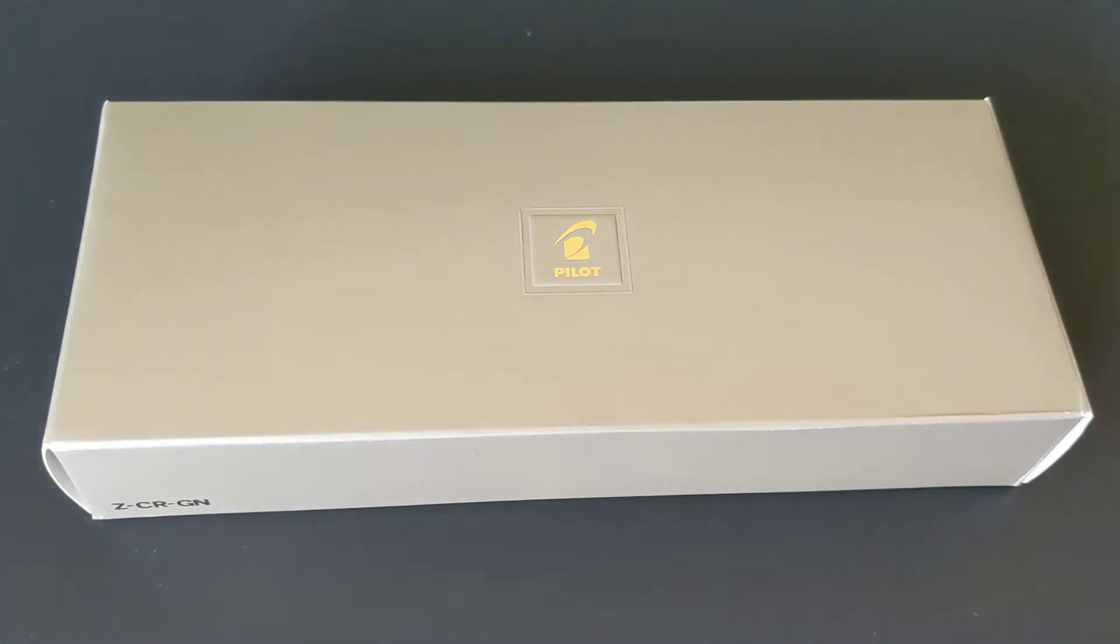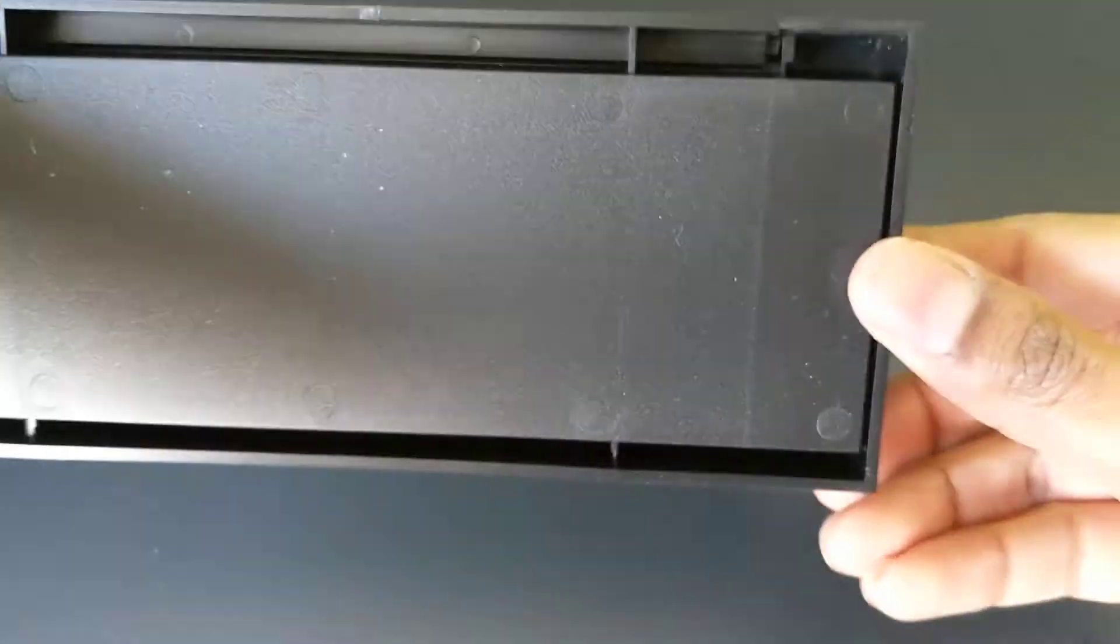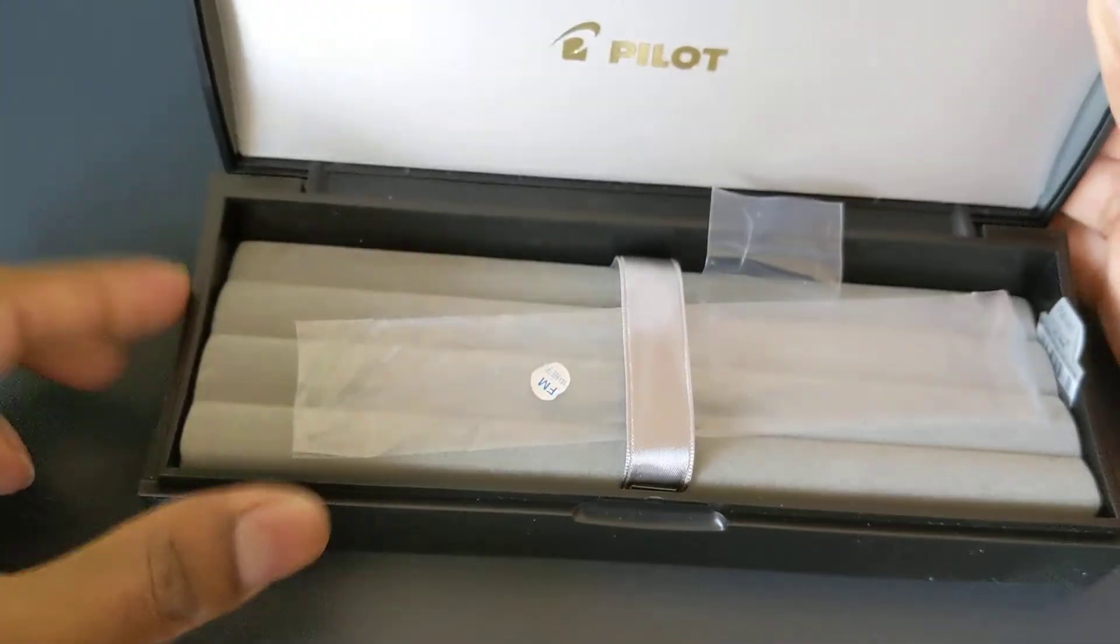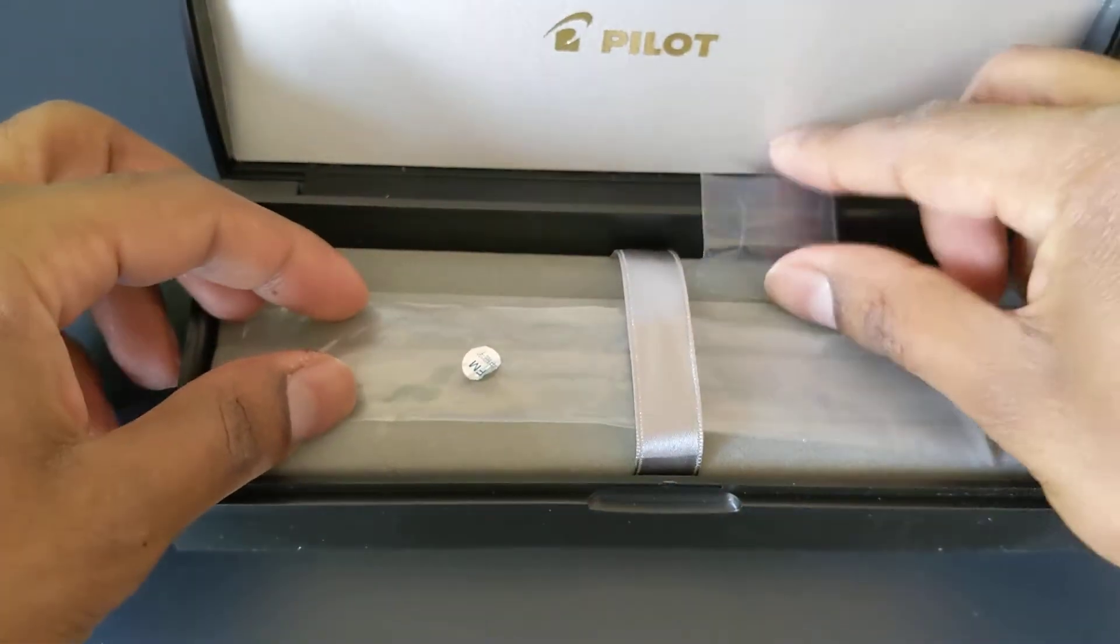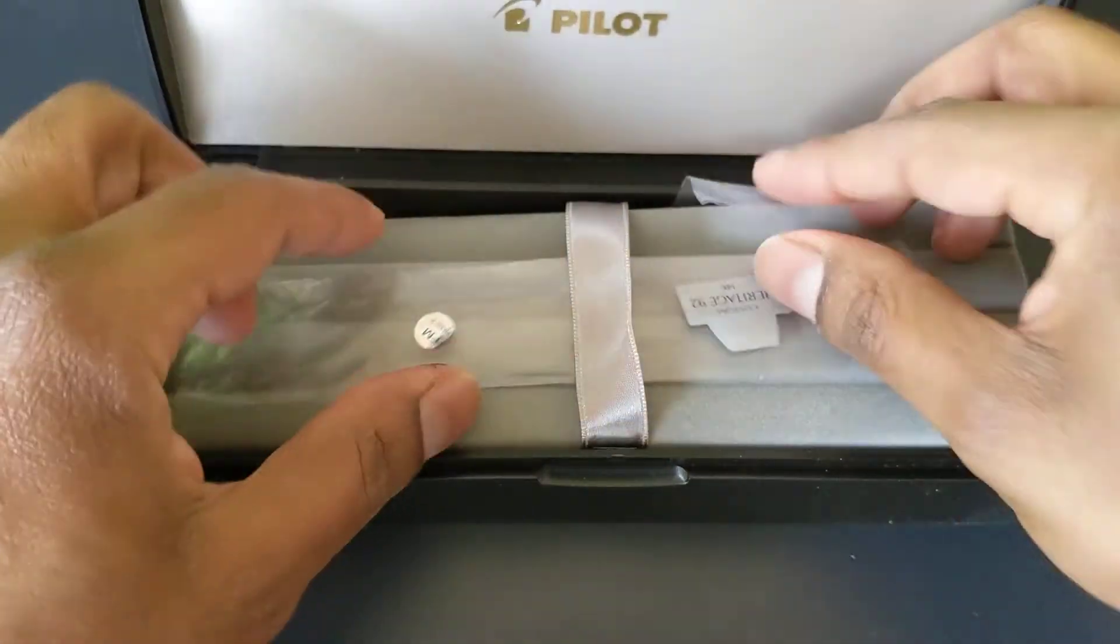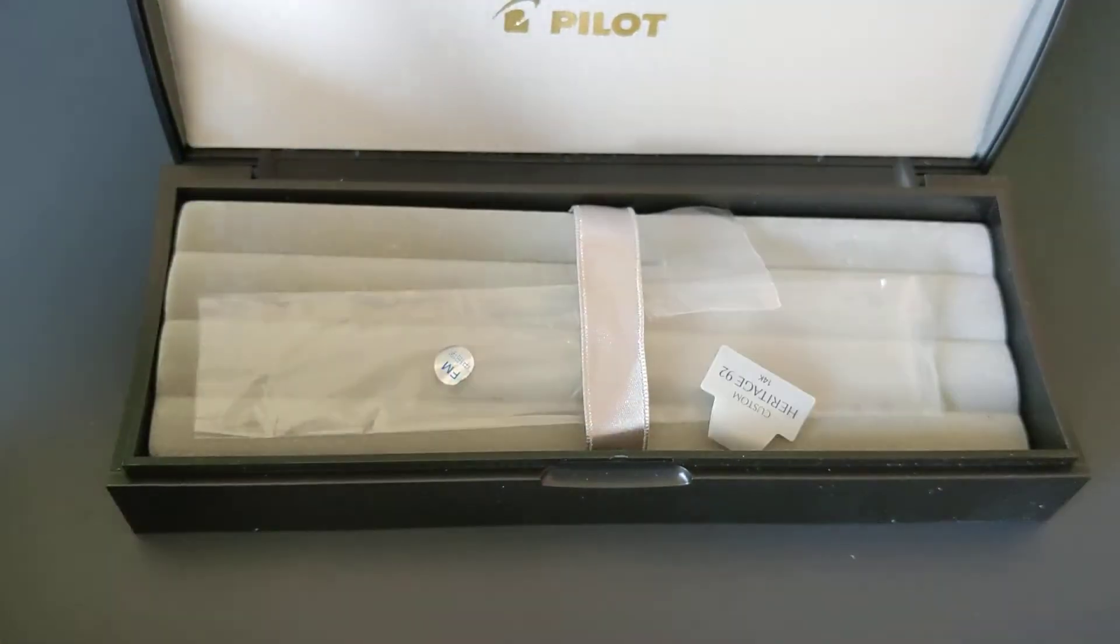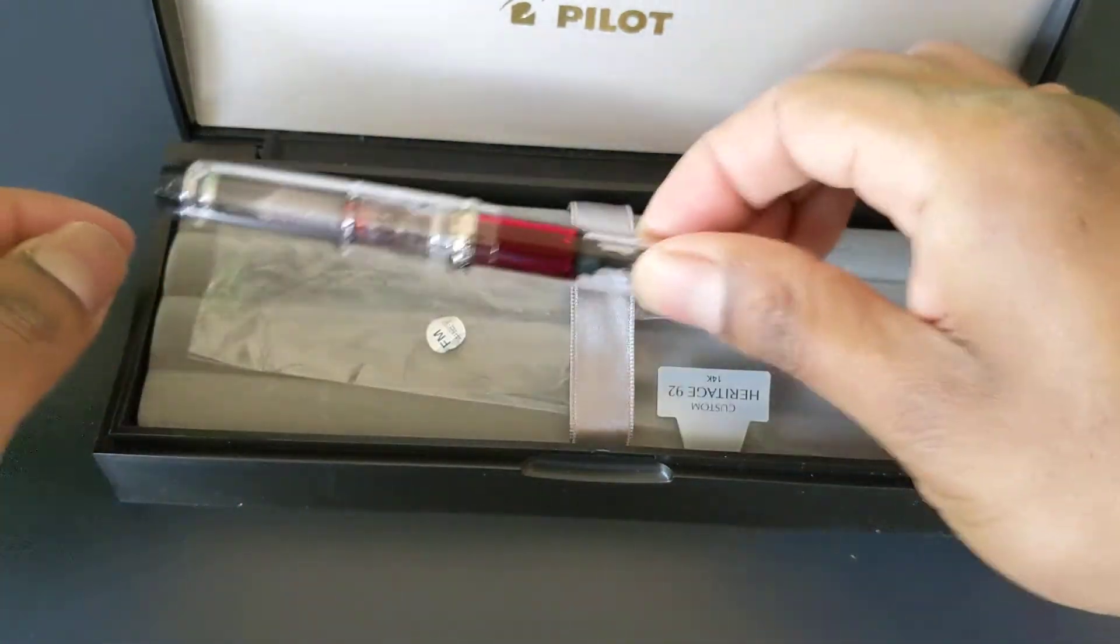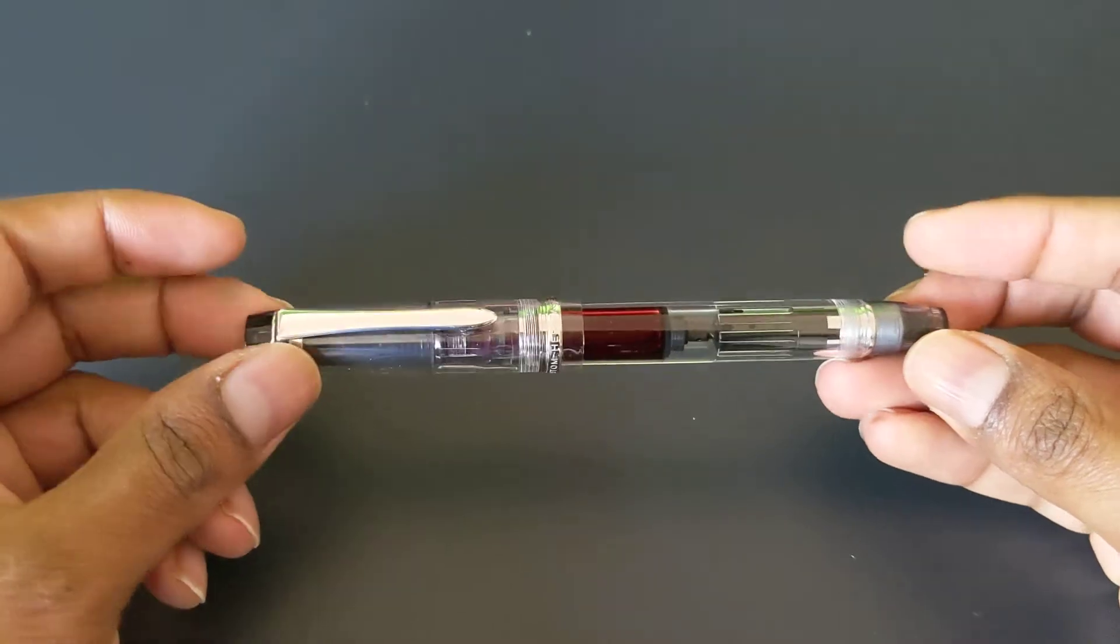This pen came in a silver cardboard box with a plastic box inside. The pen came in this sleeve. There's nothing else with the pen because it is a piston filling pen, so there's no cartridge, no converter, no bottle of ink included. I took the pen out already because I've inked it so I can give you a proper review.